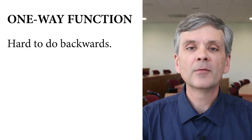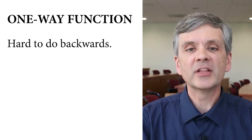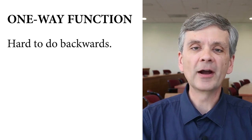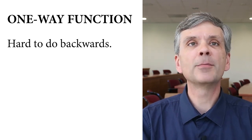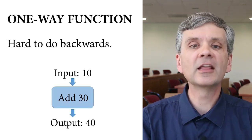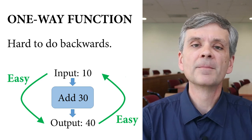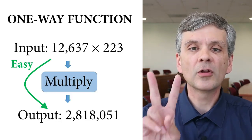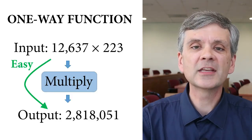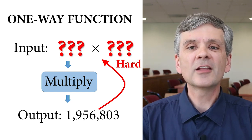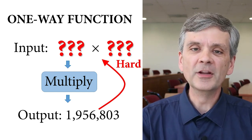What does one-way mean? That's just a function that's hard to do backwards. Some functions are easy to do backwards — for example, the function of adding 30; you just subtract 30 to do the reverse. But the function of multiplying two large prime numbers together is really hard to do backwards. Take a look at my follow-up video for more details. Okay, back to SHA-256.